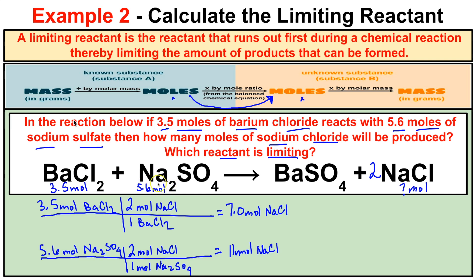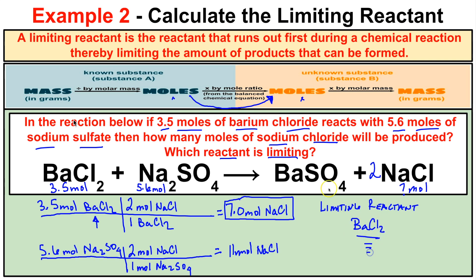So if we have 3.5 moles of BaCl₂ and 5.6 moles of Na₂SO₄, is 7 moles or 11 moles of NaCl produced? We go with the lowest answer — 7 moles — because once the BaCl₂ runs out, you cannot make any more NaCl. The limiting reactant is barium chloride (BaCl₂), which runs out first in the chemical reaction and limits the amount of sodium chloride that can be produced.